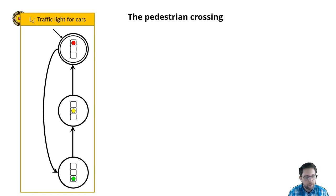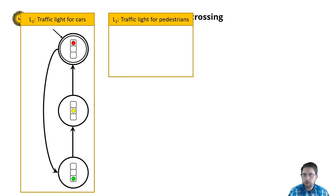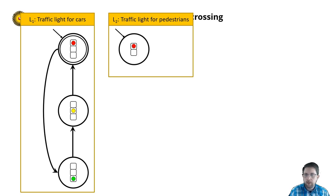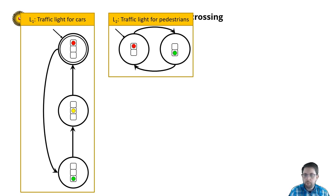For pedestrians, we only have two colors between which we alternate. So we can create a simple LTS, L2 — traffic light for pedestrians. We make it red; it can turn green, and it can go back to red. Again, we say that red is the final state, as then the situation is safe.